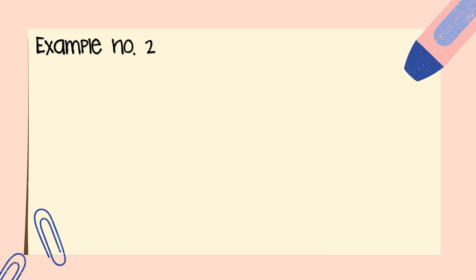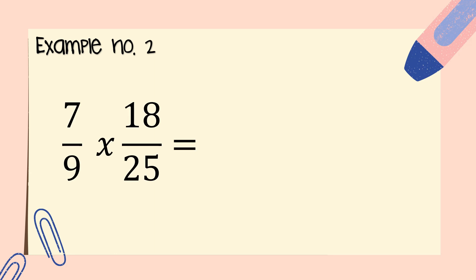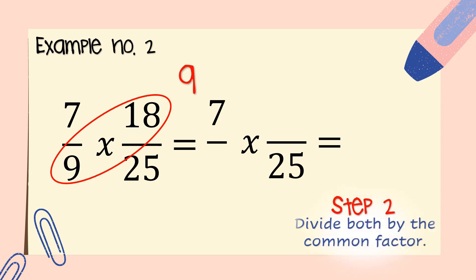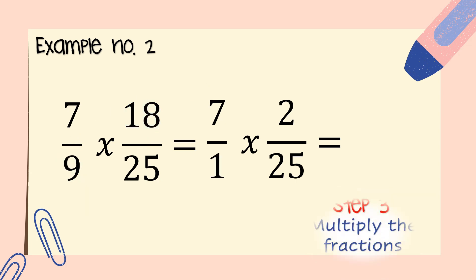Example number two using the cancellation method: seven-ninths times eighteen-twenty-fifth. Step one: find the pair of numerator and denominator with the common factor. Step two: divide both by the common factor. Step three: multiply the fractions.